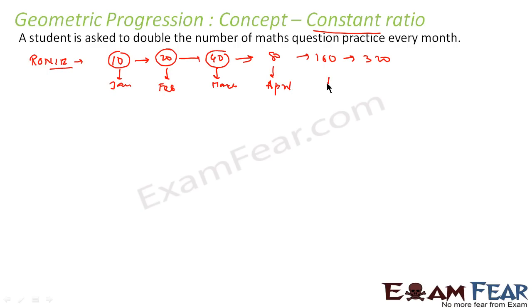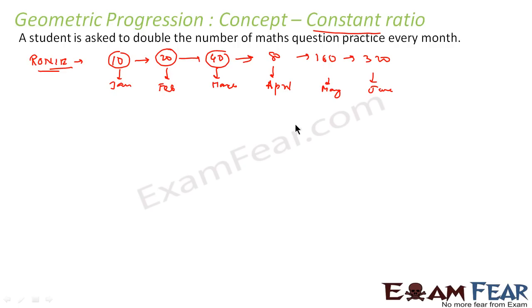So Ronnie was solving 10 questions per day in January, 20 in February, 40 in March, 80 in April, 160 in May, and 320 in June. Now if you have to find the number of questions he solved from January to June, or the number of questions he will be solving per day in July, such things are easy to find if you know GP.